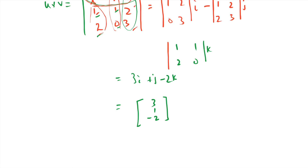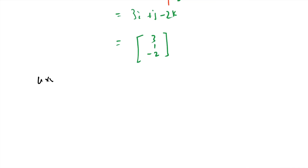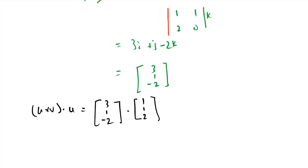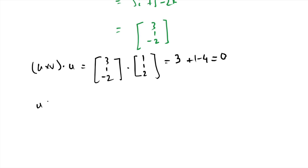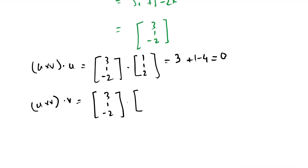Note that the resulting vector is orthogonal to both u and v. Computing (u cross v) · u: (3, 1, −2) · (1, 1, 2) = 3 + 1 − 4 = 0. And computing (u cross v) · v: (3, 1, −2) · (2, 0, 3) = 6 + 0 − 6 = 0. So u is perpendicular to u cross v, and v is also perpendicular to u cross v.